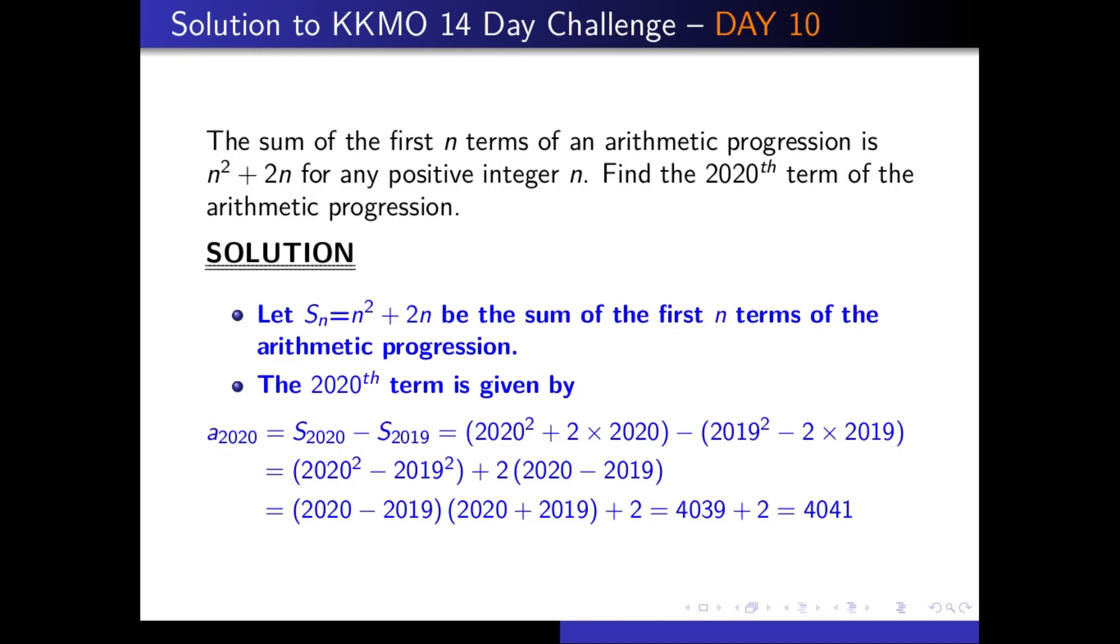We make the substitutions into our expression and get (2020² + 2 × 2020) - (2019² + 2 × 2019). We can rewrite this as (2020² - 2019²) + 2(2020 - 2019).